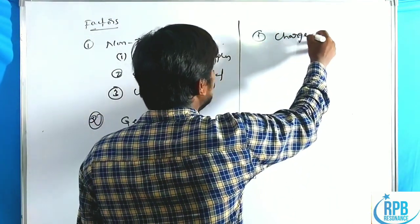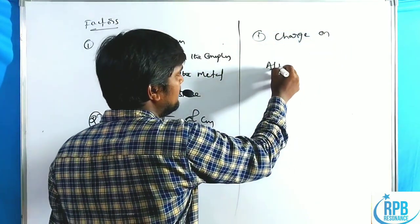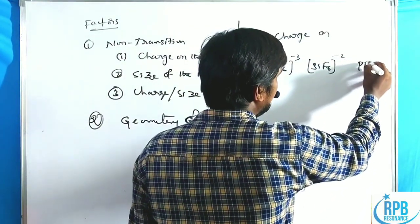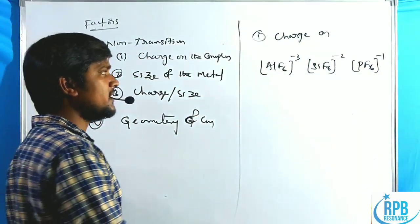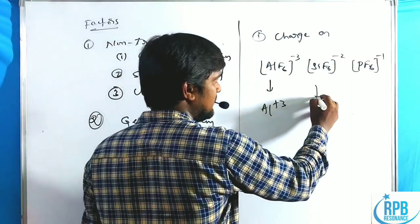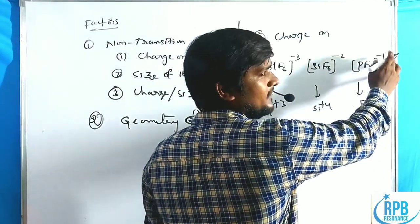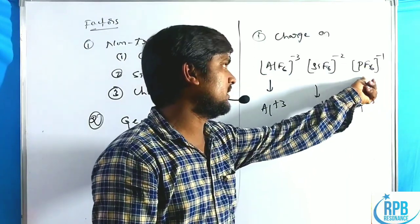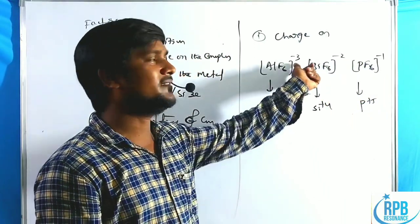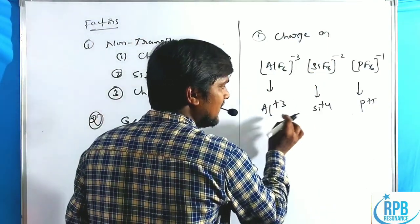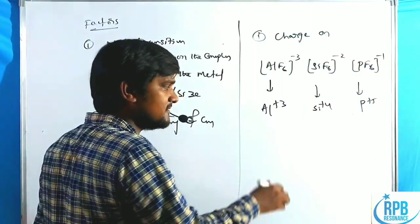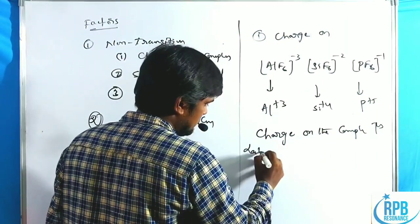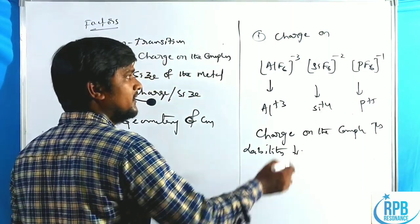First case: charge on the complex. Consider AlF6 3-, SiF6 2-, PF6 1-. The central metal atom charge here: aluminum +3, silicon +4, phosphorus +5. Whenever charge on the complex increases, lability decreases. So the lability order follows: more charge means lesser lability, lesser charge means more lability.